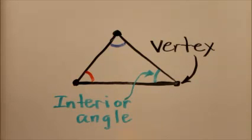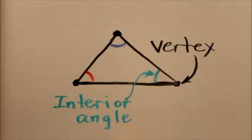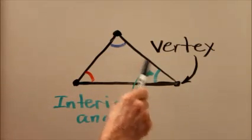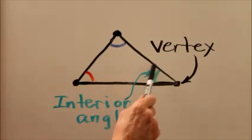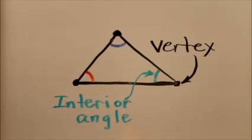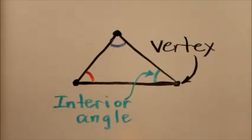Here's a drawing of a generic triangle. A vertex is a corner or a point where two sides intersect, and an interior angle is the angle between two sides at some vertex. So we have three interior angles and three vertices.